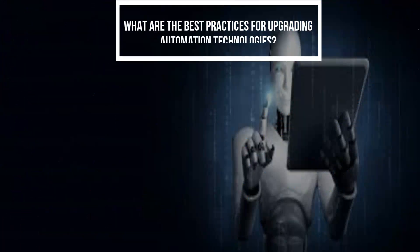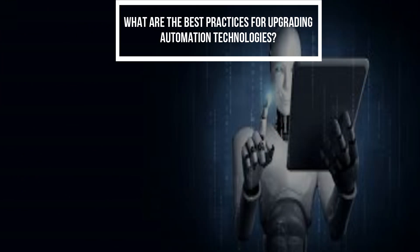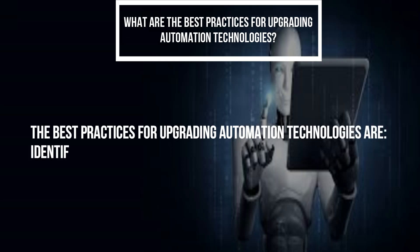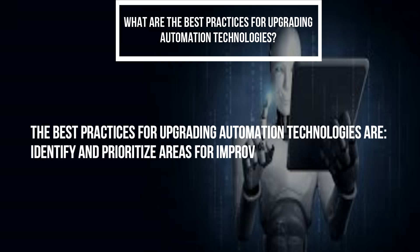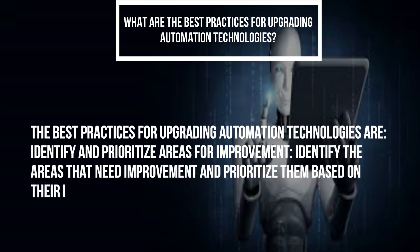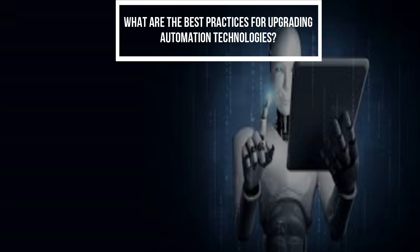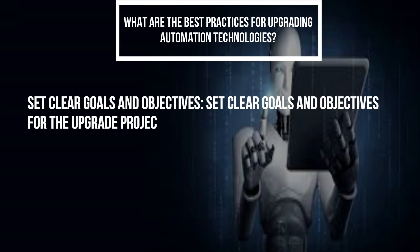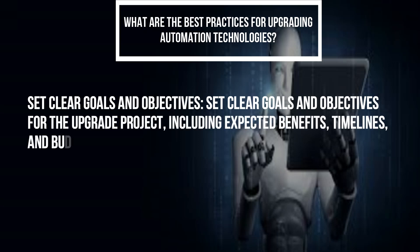What are the best practices for upgrading automation technologies? The best practices are: identify and prioritize areas for improvement based on their impact on business operations. Set clear goals and objectives for the upgrade project, including expected benefits, timelines, and budgets.